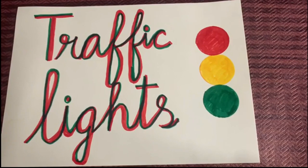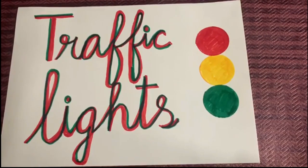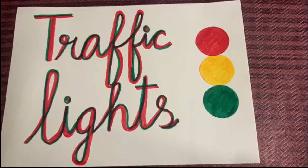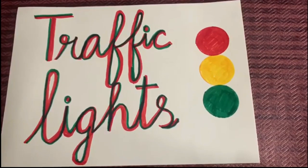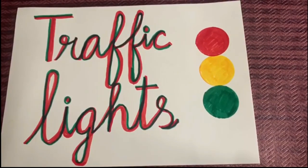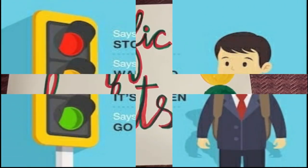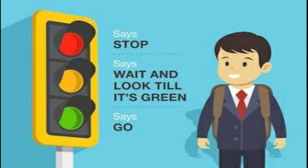We all have to follow some rules, and one of those rules are the traffic light rules. What are the rules of the traffic lights and why do we have to follow them? Traffic lights are meant to regulate traffic on the road. Let's learn what the colors of the traffic lights mean.